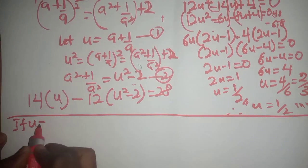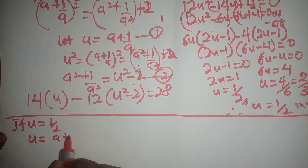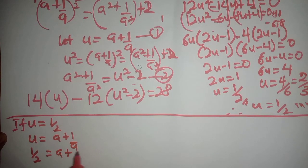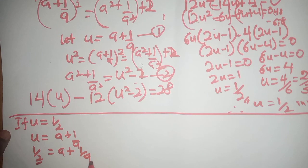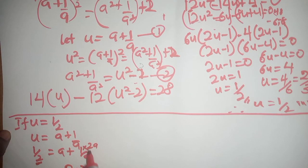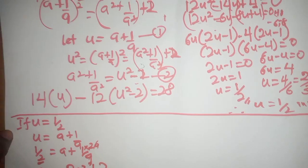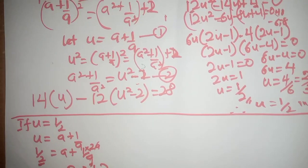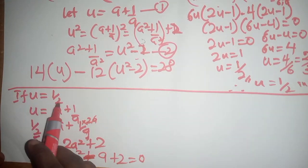If u = 1/2, then from equation one, a + 1/a = 1/2. Multiplying both sides by 2a: 2a(1/2) = 2a² + 2, which gives a = 2a² + 2, so rearranging: 2a² - a + 2 = 0.